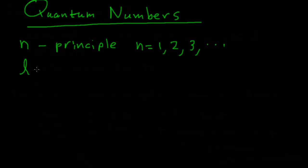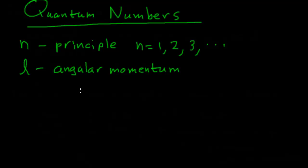The next quantum number, L, is called the angular momentum quantum number — related to the angular momentum an object in orbit or spinning would have. L depends on the value of n: it can be as small as 0, counting up in integer steps — 0, 1, 2 — until it becomes as large as n−1. So if n equals 2, then L could be 0 or 1 as two possible values. The principal quantum number limits how large the angular momentum quantum number can be.